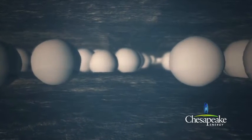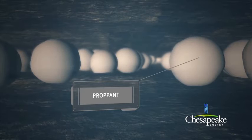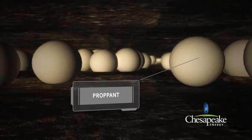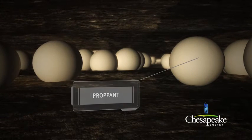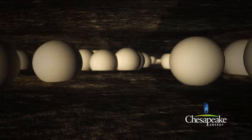At the conclusion of the fracturing treatment, the proppant allows the fractures to remain open so that the natural gas can flow into the production casing and to the surface. This completes the first of several stages in the fracturing process.